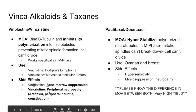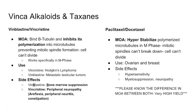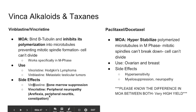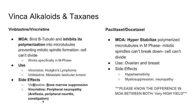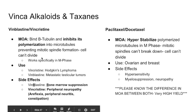Vincristine causes peripheral neuropathy, which makes sense mechanistically: microtubules are needed for axonal transport of material such as waste products along the neuron. If vincristine blocks this transport, the axon sustains damage. You'll see areflexia, peripheral neuritis, and constipation because the signal cannot be transmitted to the gastrointestinal tract.